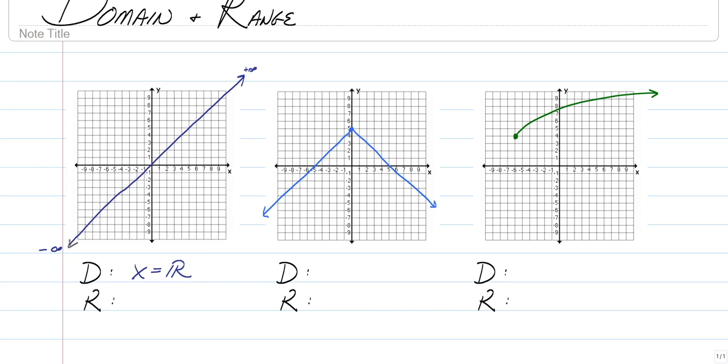Now for range, you're going to do the same thing, but you're going to think about terms of up and down. Now this one is basically y equals x. This is the easiest possible example we can give you.